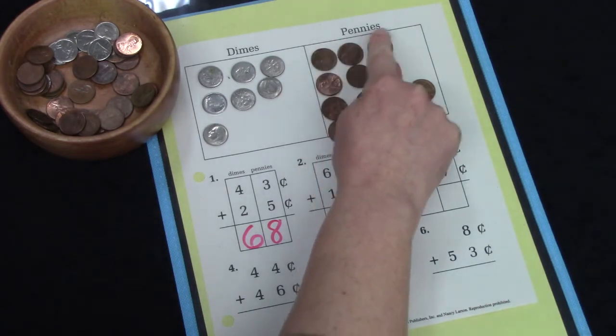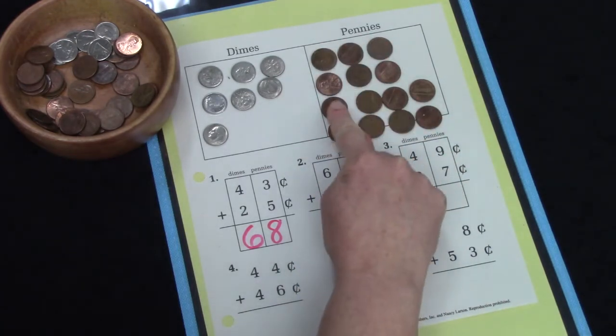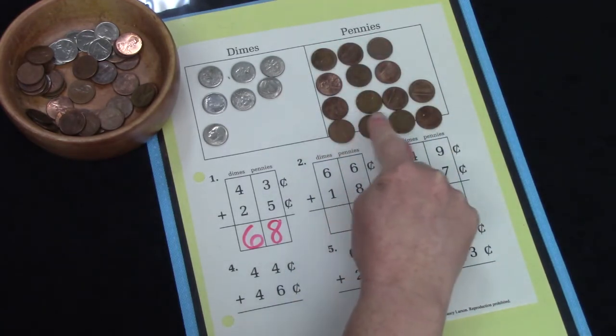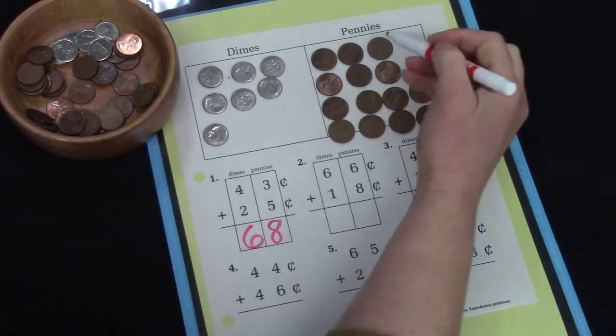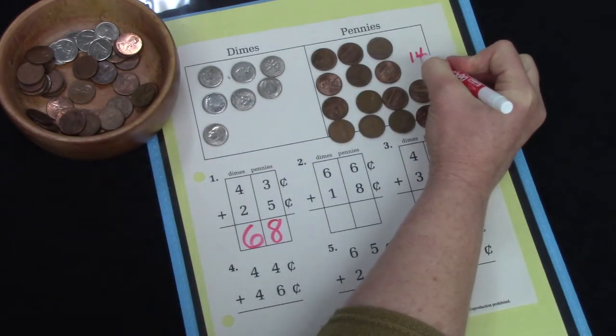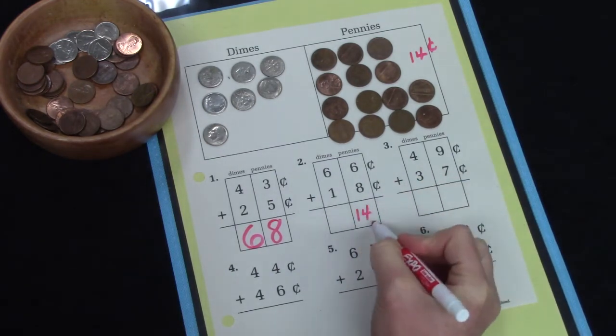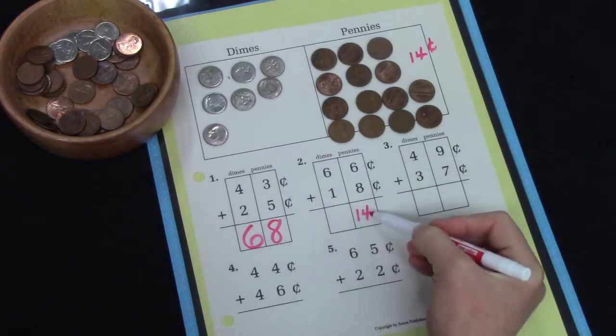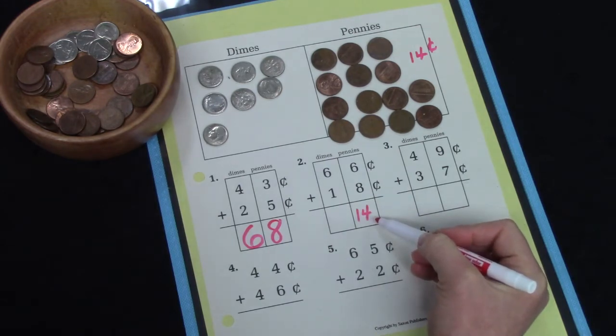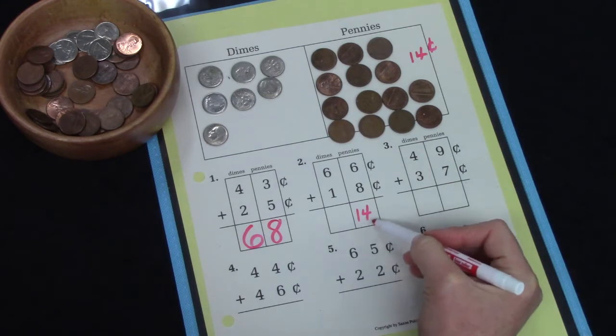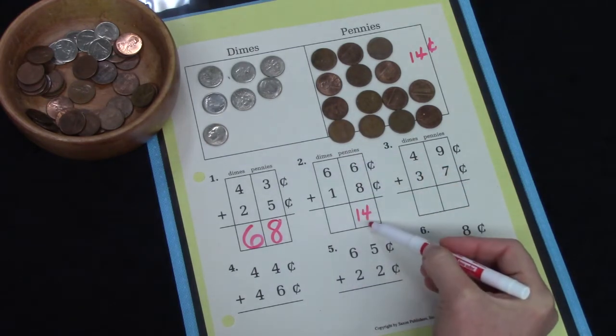Well now we're going to add this together. 6 plus 8: 1, 2, 3, 4, 5, 6, 7, 8, 9, 10, 11, 12, 13, 14. We have 14 cents here. Hmm. May I write 14 in the pennies column? I can't, can I? I cannot have two digits in one column.